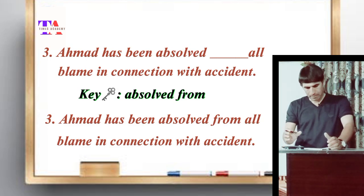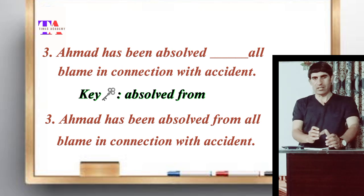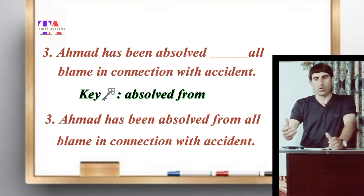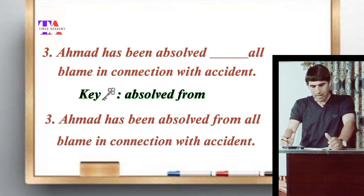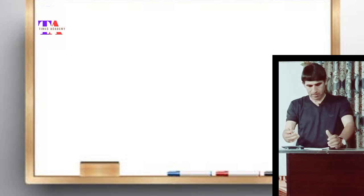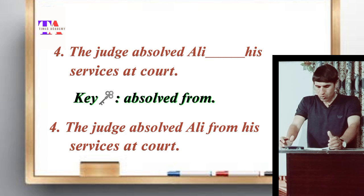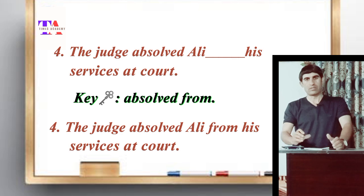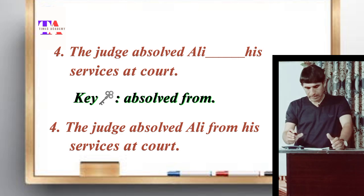Number three: 'Ahmad has been absolved from all blame in connection with the accident.' It is important to understand that the word 'absolved' here is a verb and it takes the preposition 'from'. The sentence becomes: Ahmad has been absolved from all blame in connection with the accident. On the same pattern, number four: 'The judge absolved Ali from his services it caught' — absolved from.